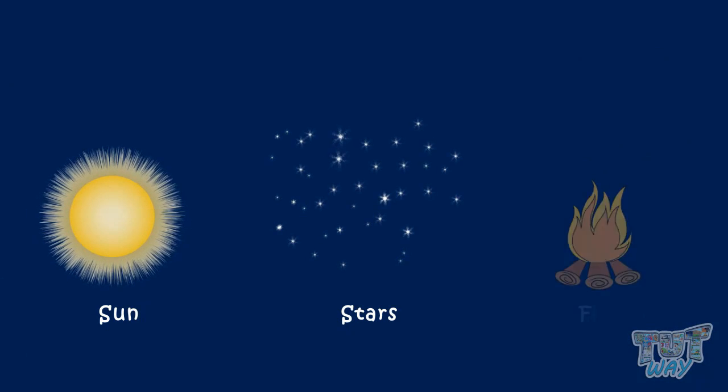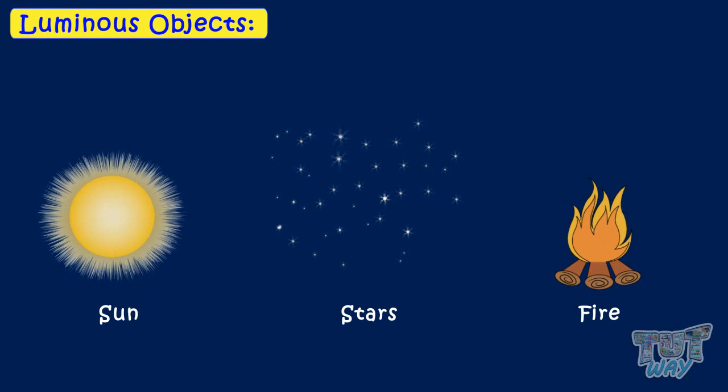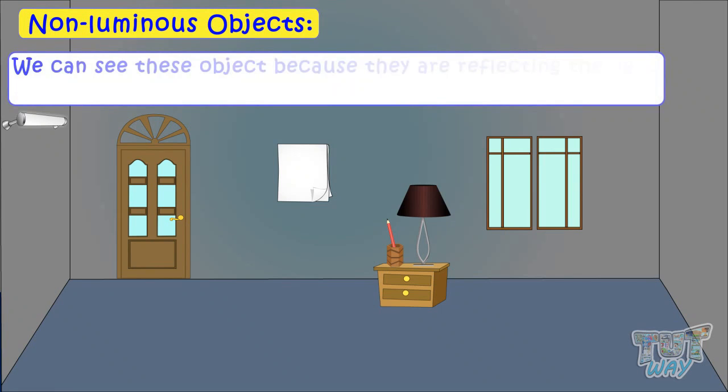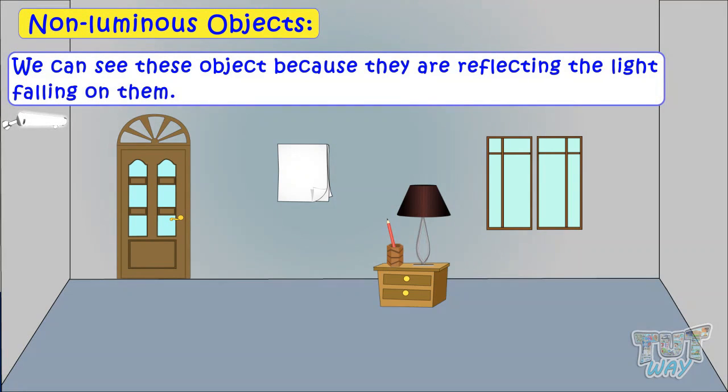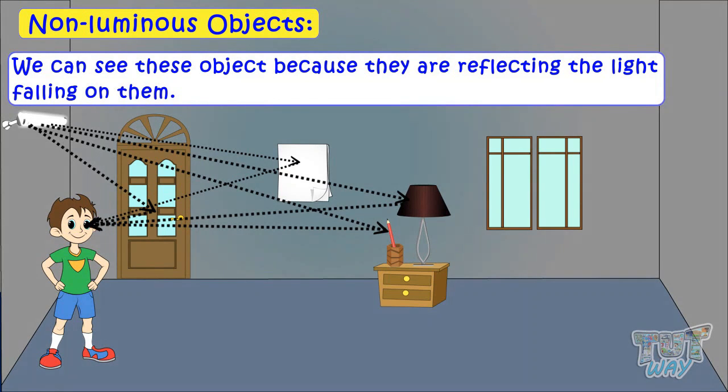These objects are emitting light of their own, so they are luminous objects. And these objects are not emitting any light of their own, so they are non-luminous objects. We are able to see them because they are reflecting the light falling on them from some other luminous source.